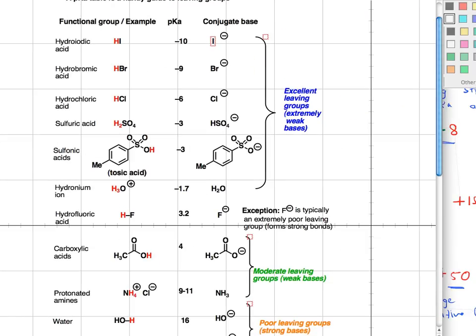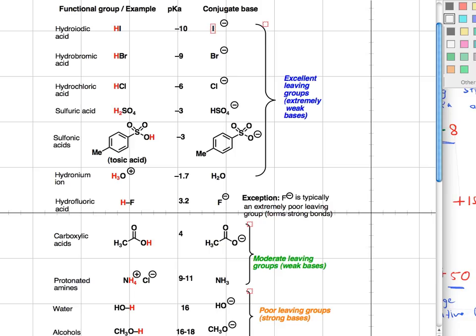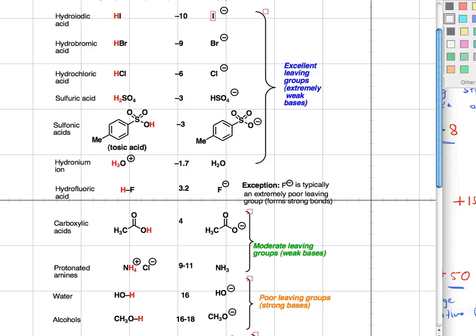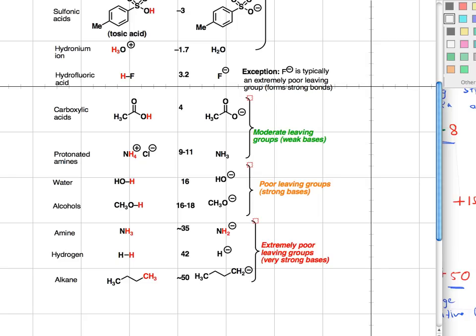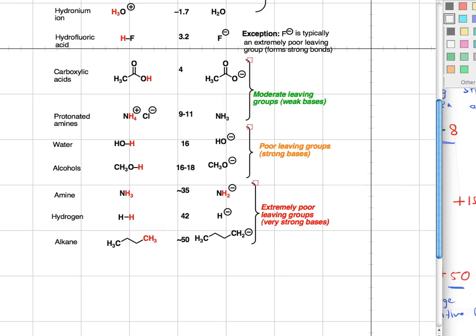You can see, we also saw this for leaving groups. So, at the very top we have HI, and then we have the hydrohalic acids, minus 10, minus 9. HCl as well, minus 6 to minus 8. Sulfuric acids are strong acids at the top. And then as we get to weaker, weaker and weaker acids, HF is about 3. Carboxylic acids, like acetic acids, 4. Protonated amines are 9 to 11. Water is 16. Alcohols are around 16 to 18.